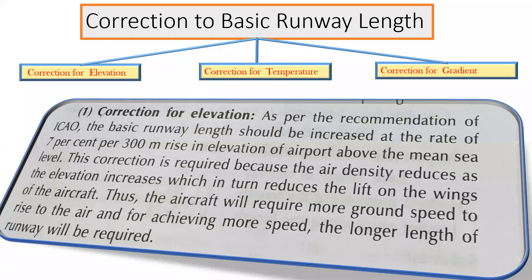Now, correction for elevation. As per the recommendation of ICAO — the International Civil Aviation Organization — the basic runway length should be increased at a rate of 7% per 300 meter rise in the elevation of an airport above mean sea level.